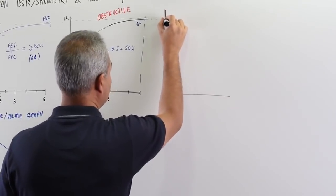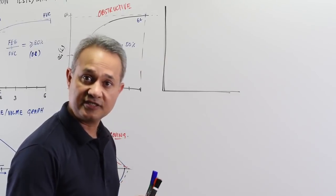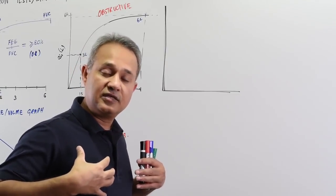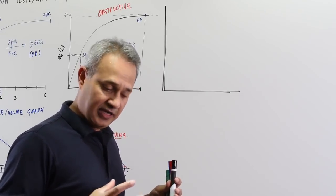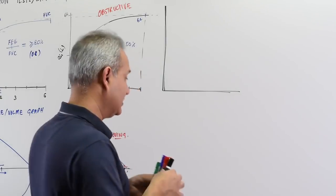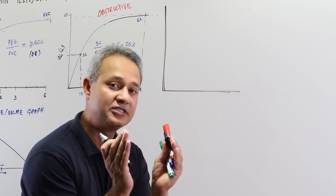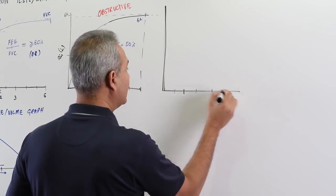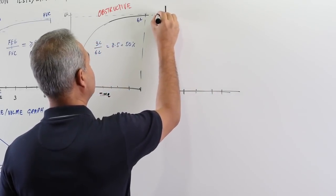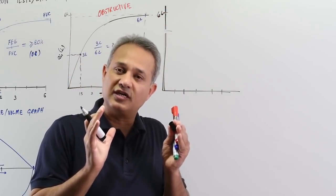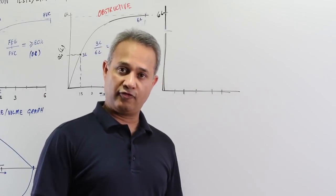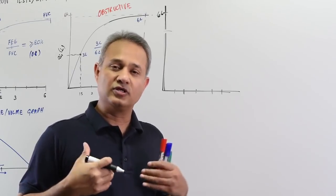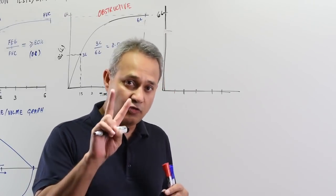Now let's discuss restrictive disease. This patient may have kyphoscoliosis, where the chest structure is not correct, or interstitial disease. The result is restriction — the lung tissue is more elastic, scarred, damaged. It can recoil fast but cannot expand; it is less compliant. In such a patient, lung volumes are reduced. When you ask this patient to inhale and then forcefully exhale, on the six-liter scale, because of restriction and scarring, they can't do a 4–5 liter inhalation — they might only take in about three liters.